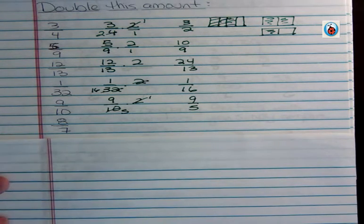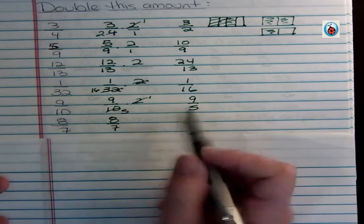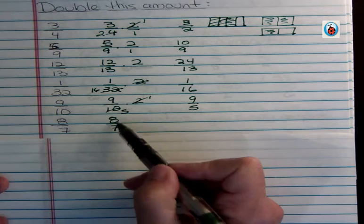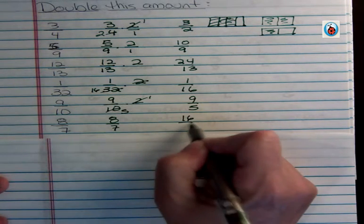We have an even denominator. I'm going to cut it in half and it becomes nine fifths. Eight sevenths. I don't have an even denominator so I can't cut seven in half, so instead I'm going to double the top. That's going to be sixteen sevenths.